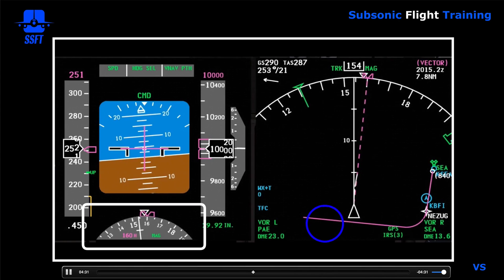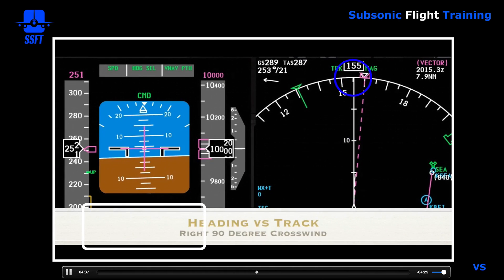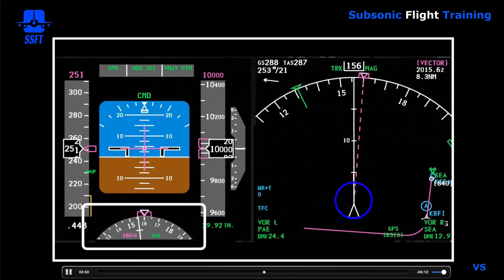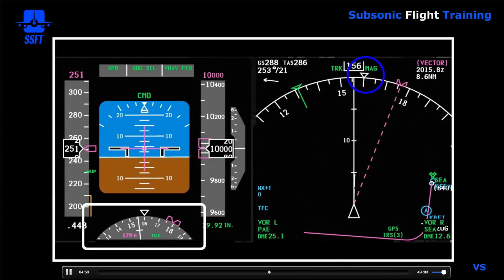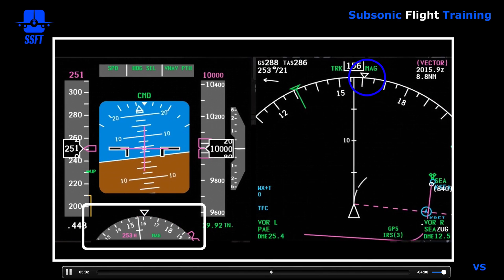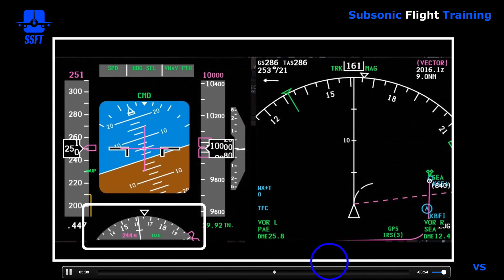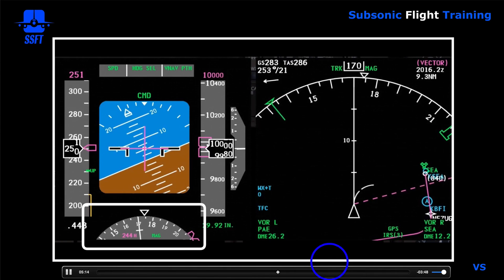On the ND — which is a track-up display — with that 90-degree crosswind from right to left, the heading is off to the right and track is shown straight ahead. The way the airplane is actually flying is along the track line — that's the actual path over the ground. The airplane is weather-vaned into the wind, heading into the wind. ATC then gives us a right turn to 245 or 250 so we can encounter a direct headwind.